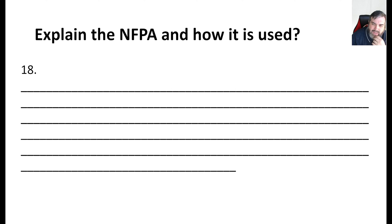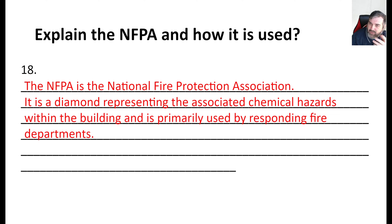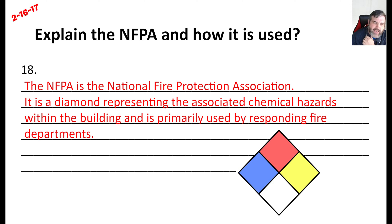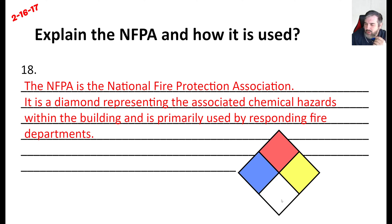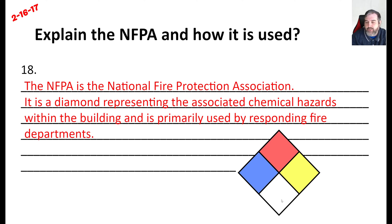Explain the NFPA and how it is used. NFPA is the National Fire Protection Association, and it uses this diamond — you've probably seen it outside stores like a home improvement store or chemical manufacturer. Red is for fire, blue for health, yellow for reactivity, and white is for special considerations. Primarily, responding fire departments use this to get an at-a-glance understanding of what they need to be aware of if a building catches fire and what they can do to protect people inside.